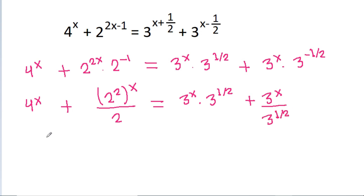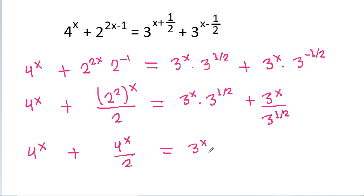So it is 4 power x plus 4 power x by 2, equal to 3 power x into 3 power (1/2) is root 3, plus 3 power x by root 3.